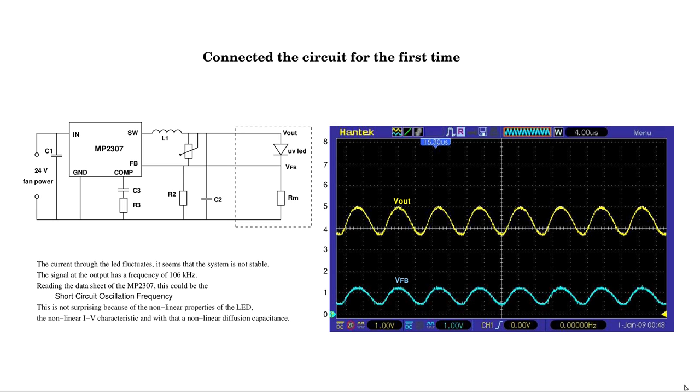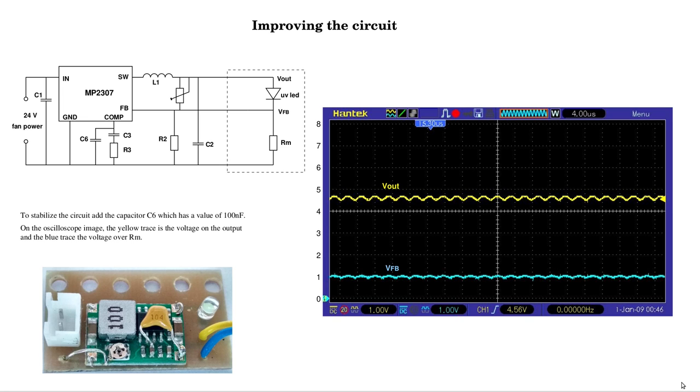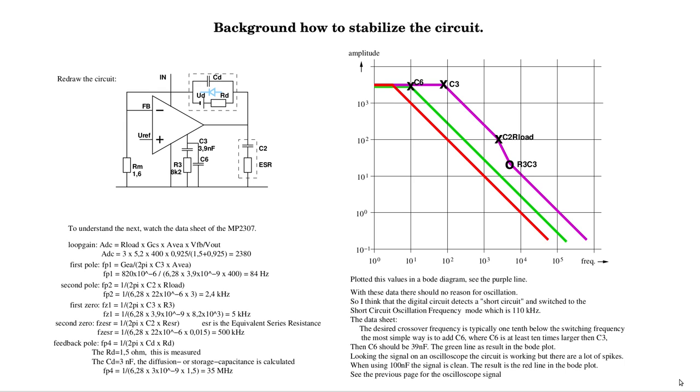When measuring the output voltage, it turned out to be unstable. There were strong fluctuations. By adding a capacitor to the circuit, it gave the expected result. For those interested, this page may provide more clarity.